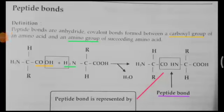In this session, we are going to discuss about peptide bonds. Let us start with the definition. Peptide bonds are anhydride covalent bonds formed between a carboxyl group of an amino acid and an amino group of the succeeding amino acid.